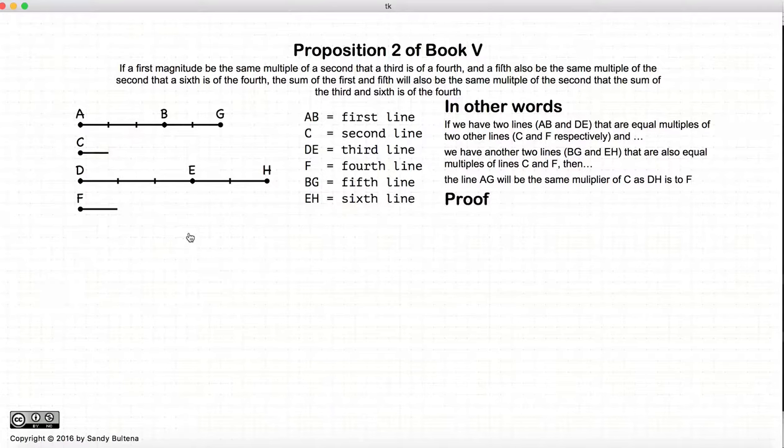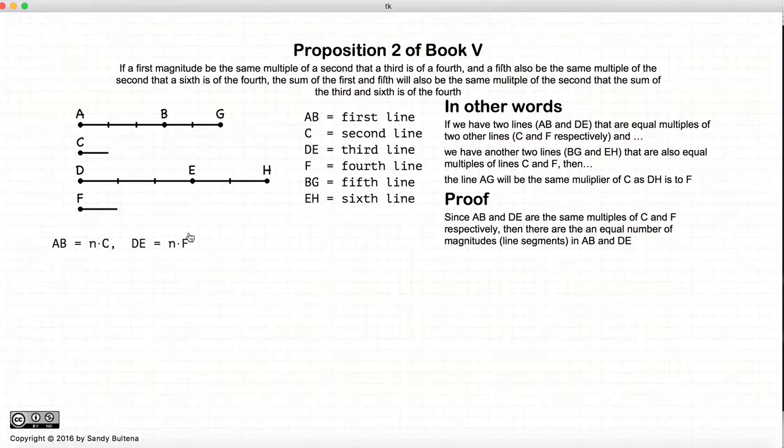Now, the proof of the proposition is a little bit of hand waving, but here we go. We have that AB is equal to NC and DE is equal to NF. Because they're equal multiples, there's the same number of Cs that we can get into this line as there are Fs that we can get into this line. That's just the definition of equal multiple.